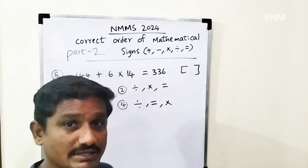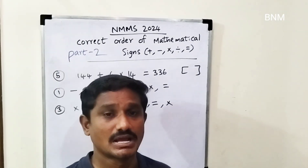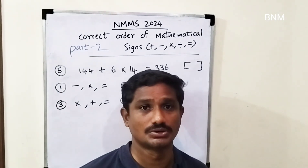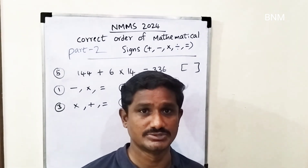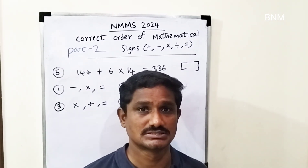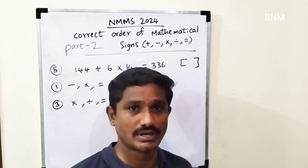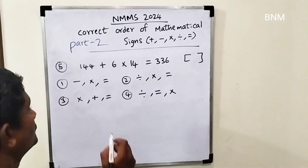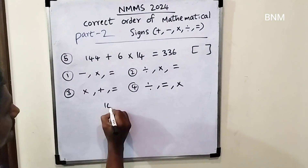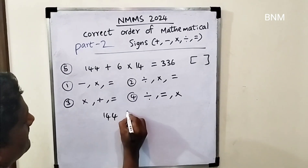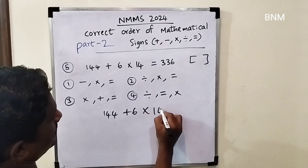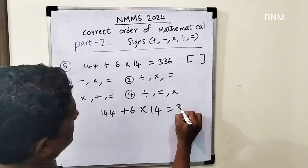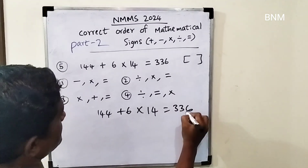This is the right answer. After that, I will practice bits — I will answer in the comment box. The last one is the right answer: 144 plus 6 into 40 is equal to 326.